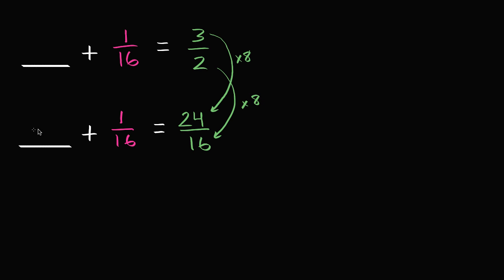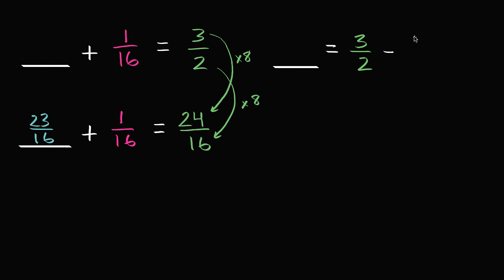We can view this as a certain number of 16ths. So how many 16ths plus 1/16 is going to be 24/16? Well, 23/16. If I have 23/16 and I add one more 16th, I'm going to have 24/16. Another way you could think about it — even from the first step — is: if blank plus 1/16 is equal to 3/2, then blank is going to be equal to 3/2 minus 1/16. This is another way you could have tackled it.